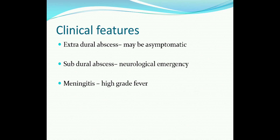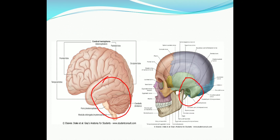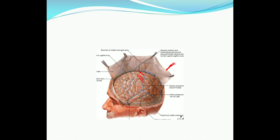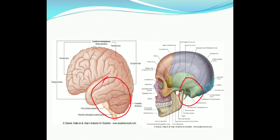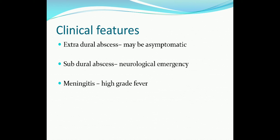Extradural abscess may be asymptomatic, while subdural abscess is a neurological emergency. Immediately beneath the dura is the arachnoid, so subdural abscess may lead to meningitis — high-grade fever, headache, malaise, neck rigidity, positive Kernig's sign, etc. Subdural abscess may also cause thrombophlebitis of veins over the cerebral hemispheres, leading to aphasia, hemiplegia, epilepsy, etc. There may also be features of increased intracranial tension, like papilledema.